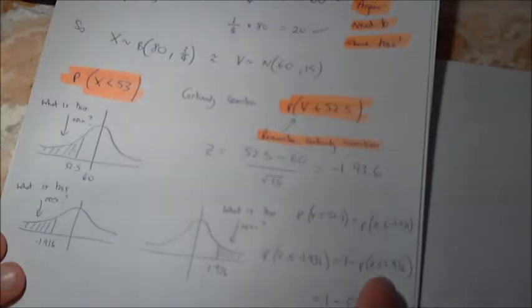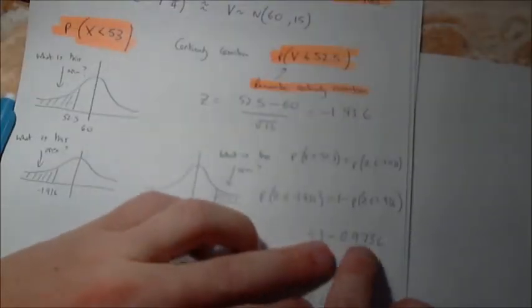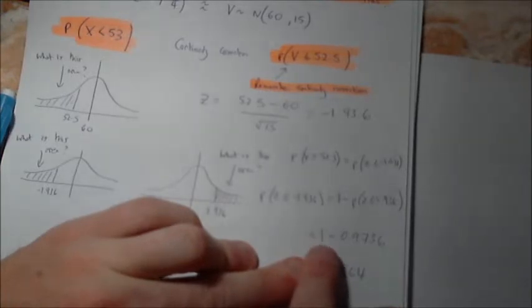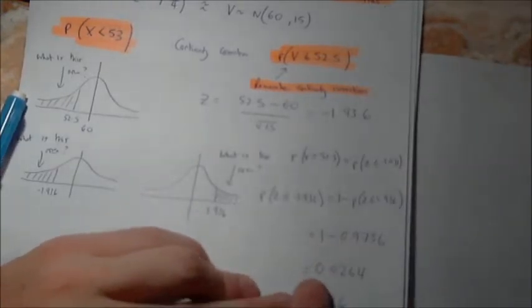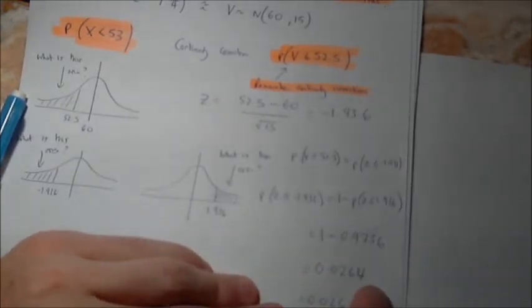I have now gone to the back of the book, and I've tried to work out what Z of being 1.936 is, and it came out with 0.9736. So it needs to be 1 minus this value, which got me 0.0264. Now, at this stage,